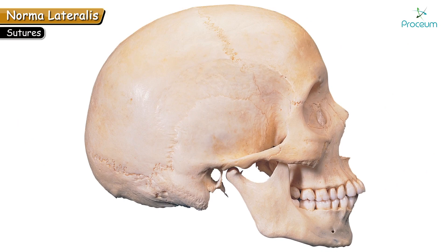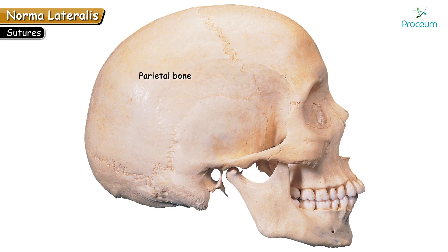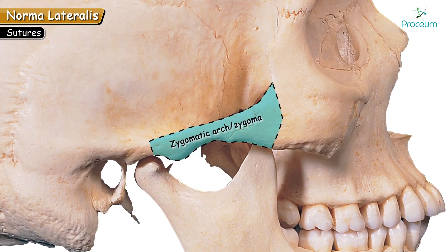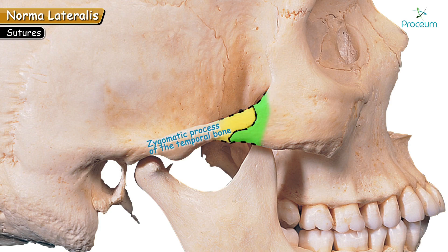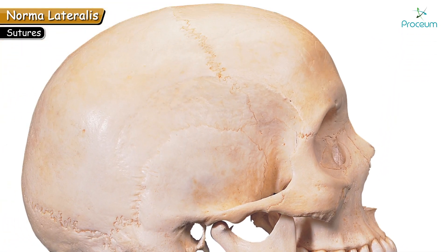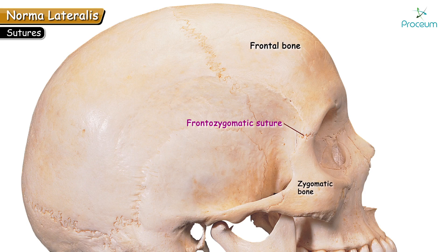Let's continue with the sutures joining these bones. The suture joining the frontal and parietal is the coronal suture. The suture present at the junction of the parietal and occipital posteriorly is the lambdoid suture. The most prominent arch present in this view is the zygomatic arch, also known as the zygoma. This zygomatic arch is formed by the fusion of two processes: the zygomatic process of the temporal bone and the temporal process of the zygomatic bone. The frontozygomatic suture is also well appreciated along the lateral margins of the orbit.